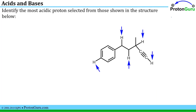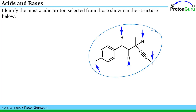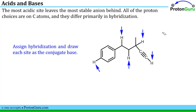Another type of question we can address using lessons 1.9 and 1.10 is identifying the most acidic site on a molecule. We are given a series of protons in a large molecule and asked which would be most acidic — in other words, if we added a base, which proton would come off first? The most acidic site will leave the most stable anion, or most stable conjugate base, behind. All the proton choices here are on carbon atoms and differ primarily in hybridization, so we should assign hybridizations and redraw the compounds as their conjugate base forms.